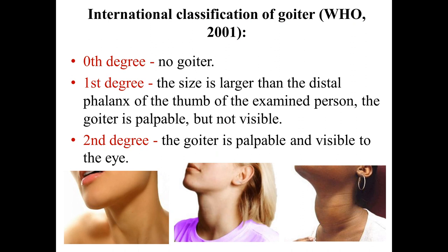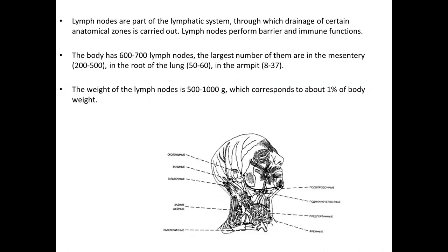According to the international classification of goiter, there are three degrees of enlargement. Zero degree: no goiter. First degree: size is larger than the distal phalanx of the thumb of the examined person; the goiter is palpable but not visible. Second degree: the goiter is palpable and visible.